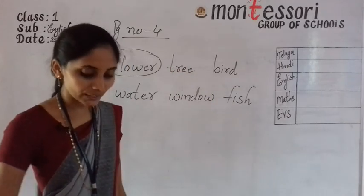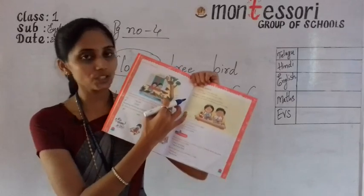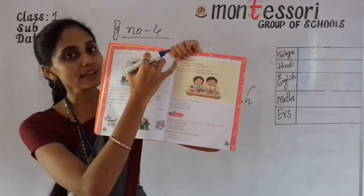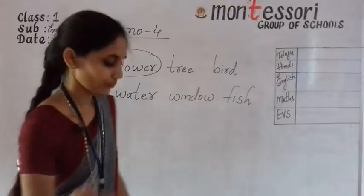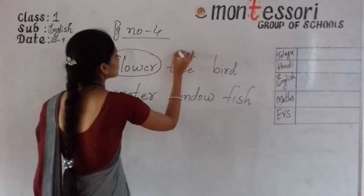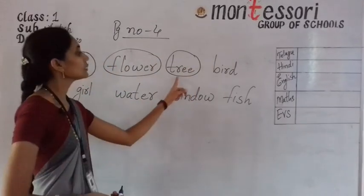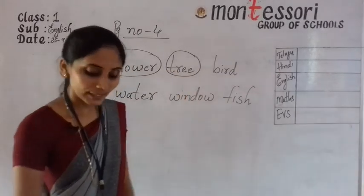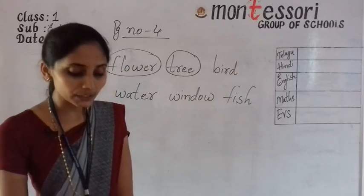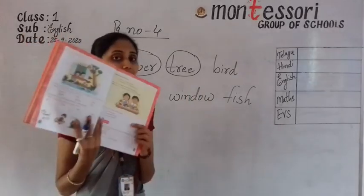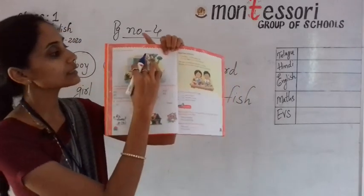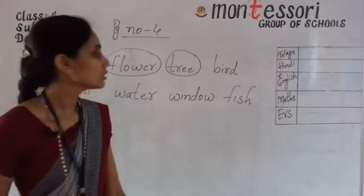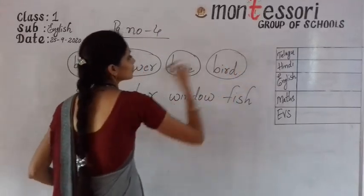Next one is tree. Can you see the tree in that picture? The bird is sitting on the branch of a tree. Circle the word tree. Next one is bird, B-I-R-D. Can you see the bird in this picture? The bird is sitting on the edge of a branch on a tree. Circle the word bird.